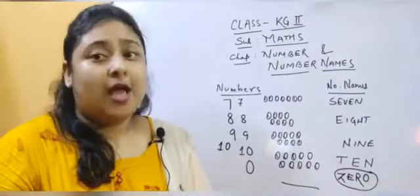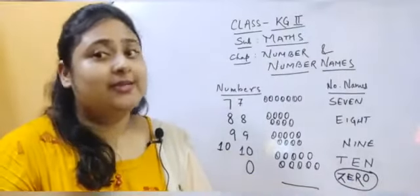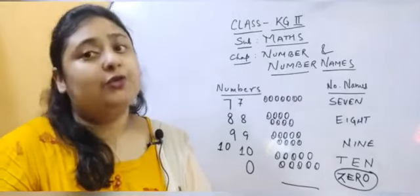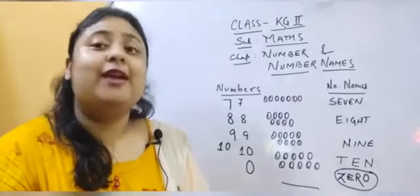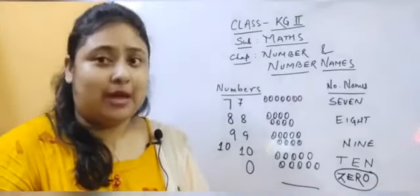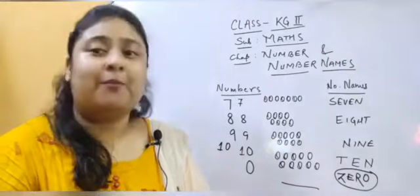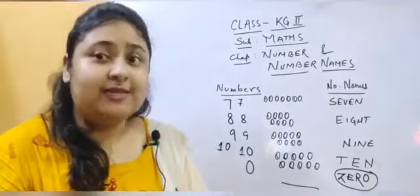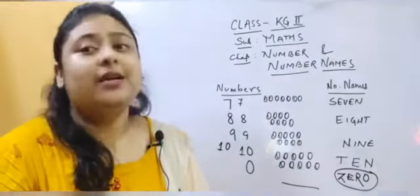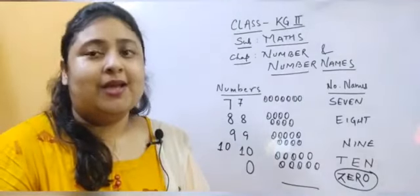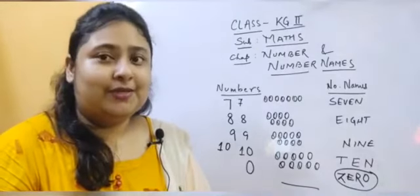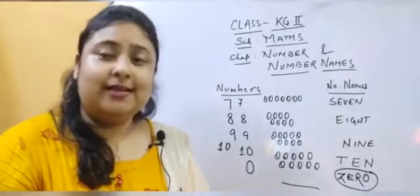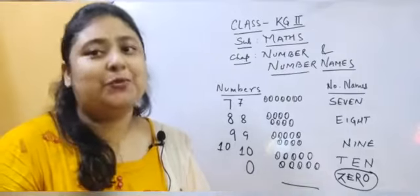So children, I hope these numbers and number names are clear to all of you. We have learnt about numbers 1 to 10 in this class, along with their number names. So children, see you in the next class. Till then, stay safe. Thank you.